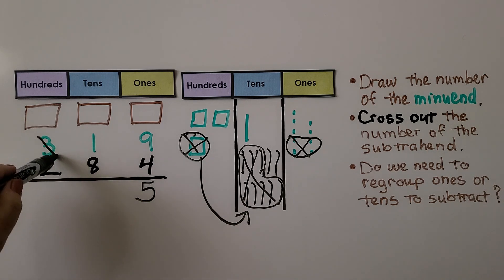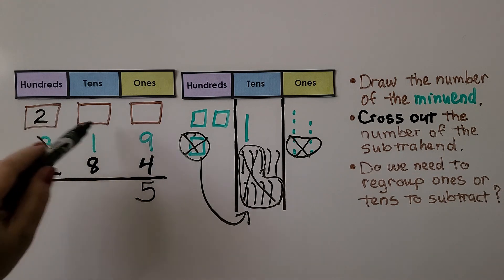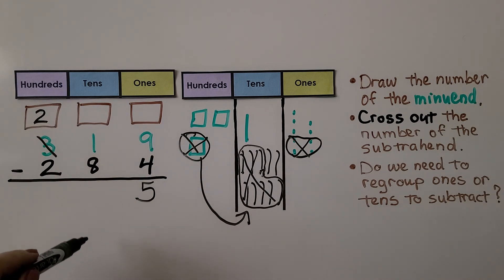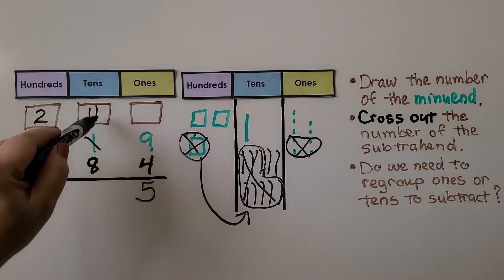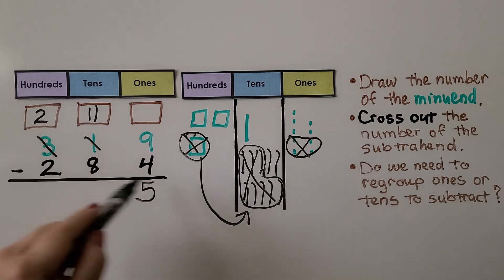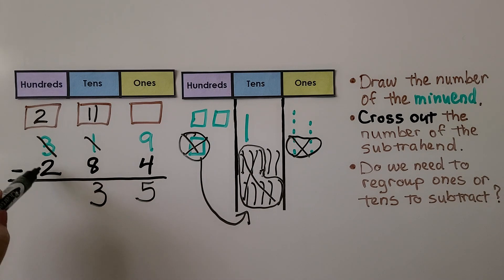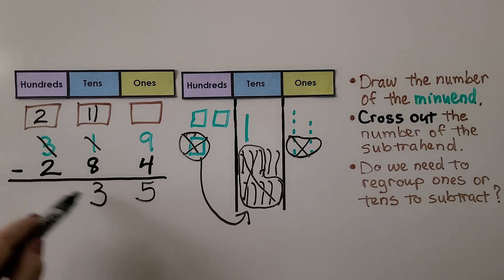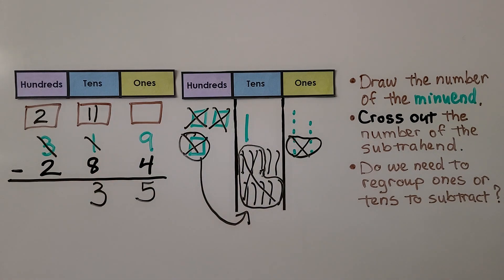We took a hundred, so instead of three hundreds we now have two hundreds. We gave it to the tens place as ten tens, so instead of one ten we have eleven tens. We took eight away — that leaves three tens. Now we need to take two hundreds away; that leaves no hundreds. Our difference is 35.